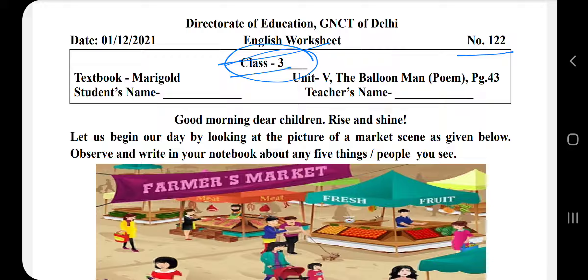Before starting this worksheet you have to write down your class with your section A, B, C, D, whatever yours is, your name and your teacher's name. Then you have to write your unit, unit 5, the balloon man, because this is the poem and the worksheet is the same.